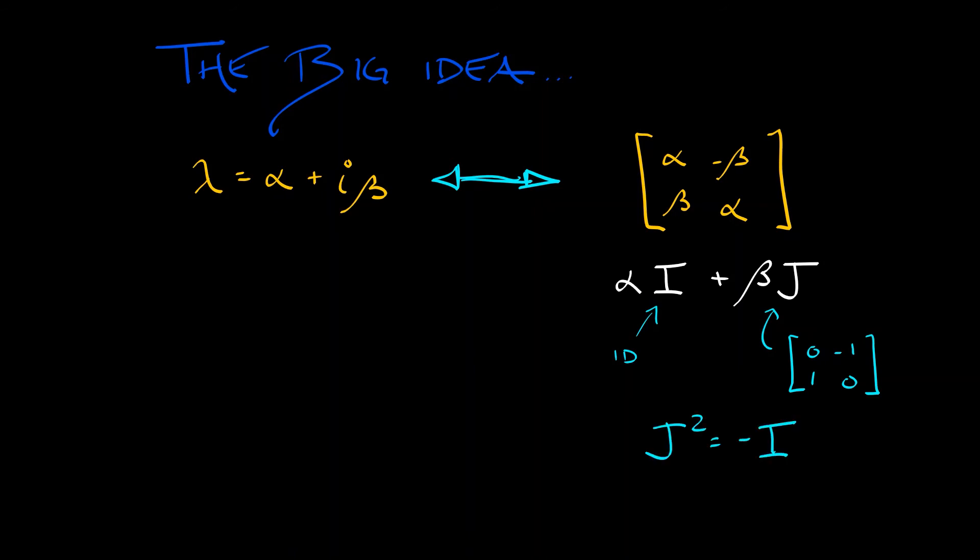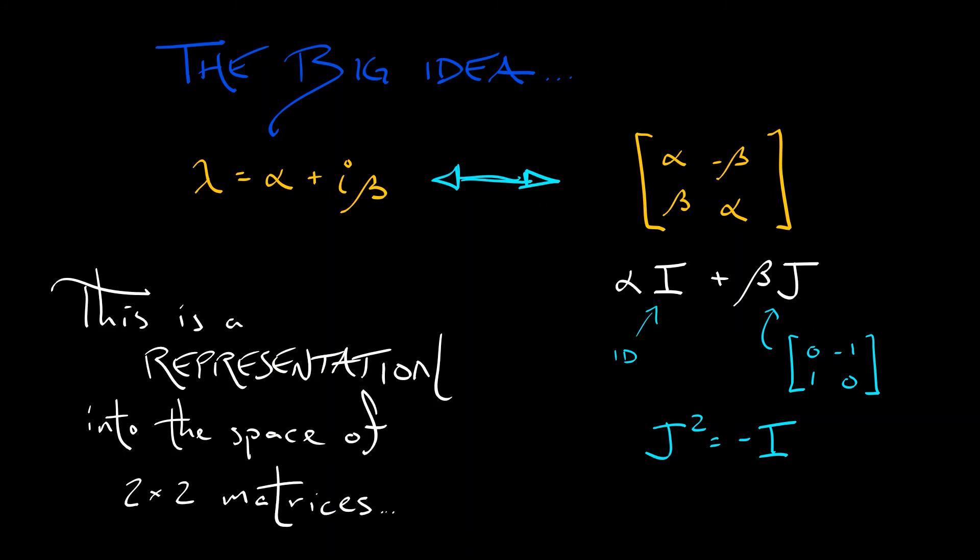That is like the imaginary unit in that j squared equals minus i. Now, oh my gosh, there's so many i's and j's running around here. This is so confusing. I'm so sorry. But the idea of replacing your complex numbers with two by two real matrices that algebraically behave the same way is called a representation of the complex numbers into the space of two by two matrices. Very, very cool. This is going to be helpful to us.